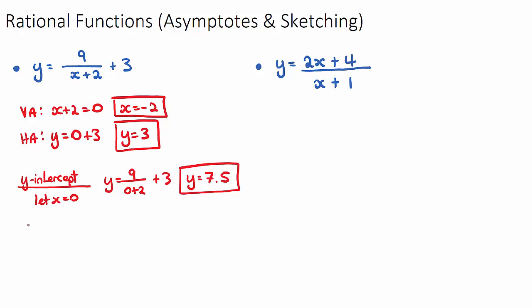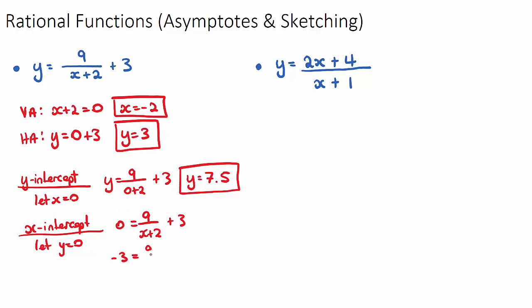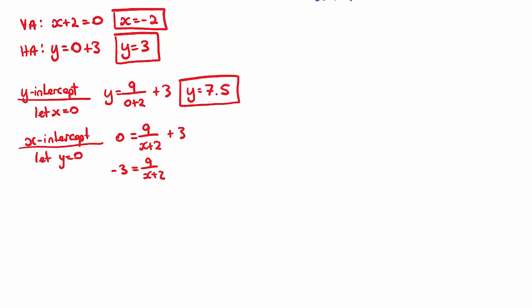For the X-intercept, we let Y equal 0, so 0 equals 9 over (X plus 2) plus 3. Moving the 3 across gives negative 3 equals 9 over (X plus 2). Multiplying both sides by (X plus 2) gives negative 3X minus 6 equals 9. Then negative 3X equals 15, so X equals 15 over negative 3, which is negative 5.